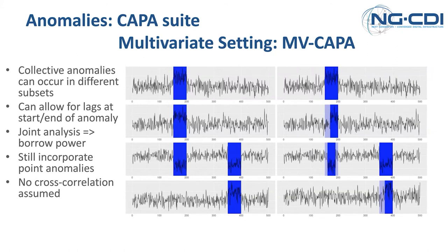Naturally this gives rise to questions about extending to a multivariate setting — say four or forty streams at once. You can get point and collective anomalies just as easily in that setting, but we'd also want to allow for the fact that collective anomalies may not occur across all series at once — they may occur in subsets. There may also be jitter as to when the collective anomaly starts, with a delay or early finish in a particular channel. Developing a method to identify these as a common subset and still detect point anomalies led to multivariate kappa.